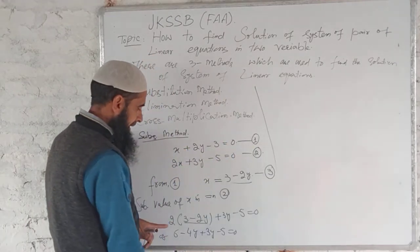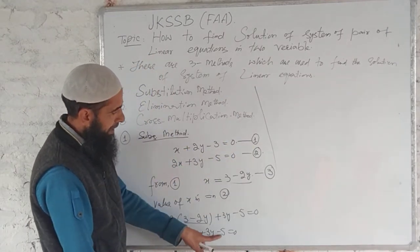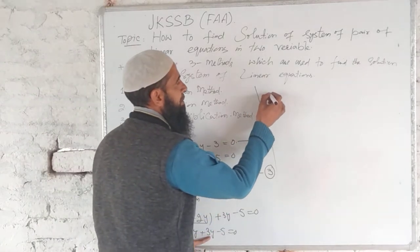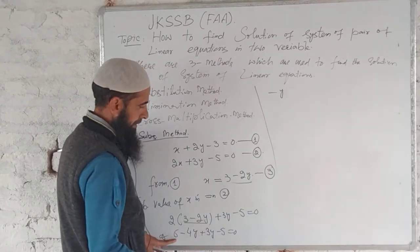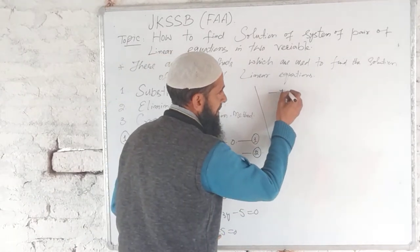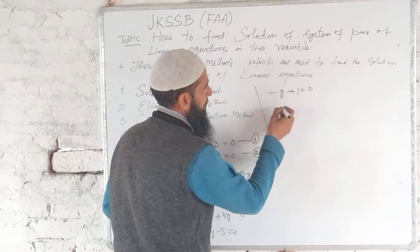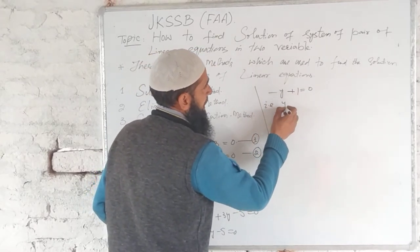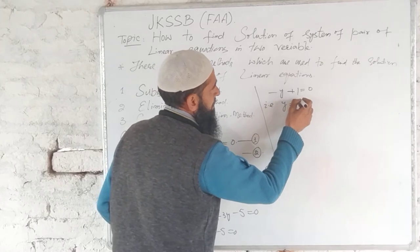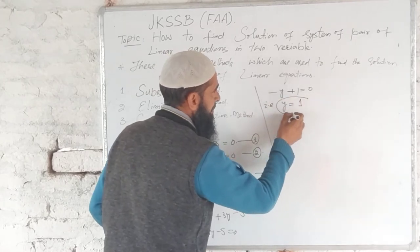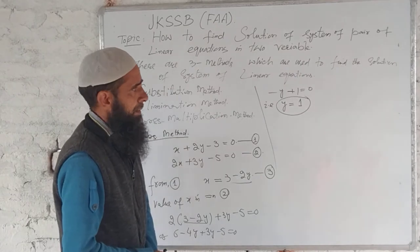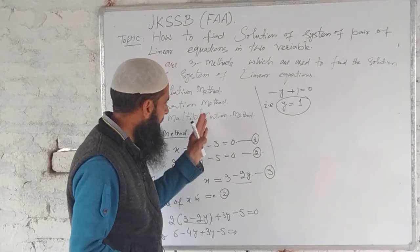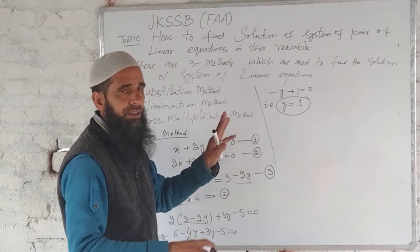Simplify again, it is 6 minus 5 is 1. Minus 4y plus 3y is simply minus y. 6 minus 5 that is plus 1 equal to 0, that is y is equal to 1.